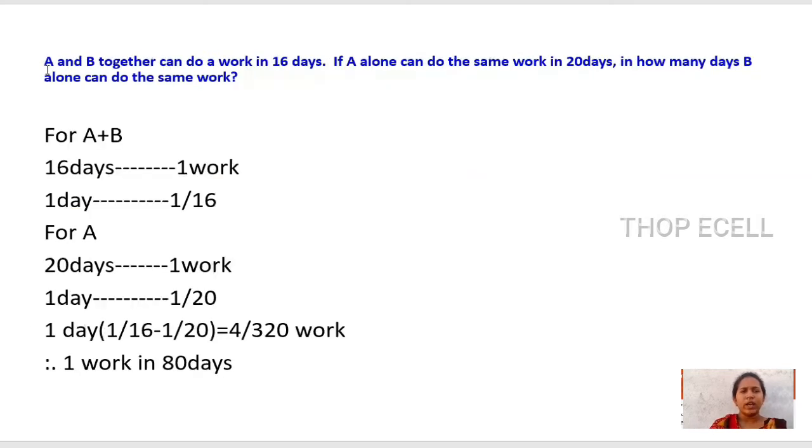Next, A and B together can do work in 16 days. If A can do the same work in 20 days, in how many days can B alone do the same work?